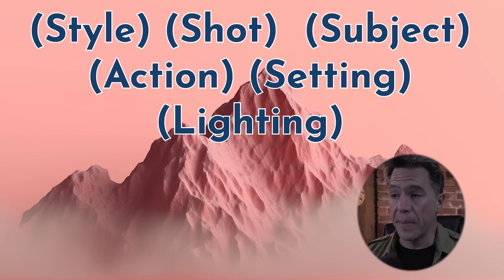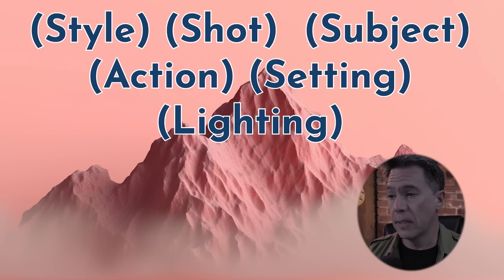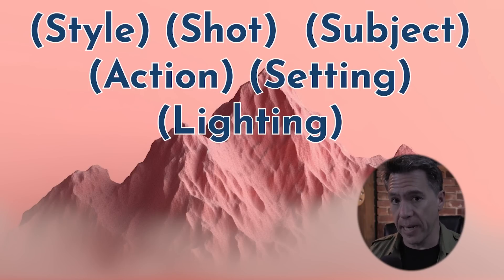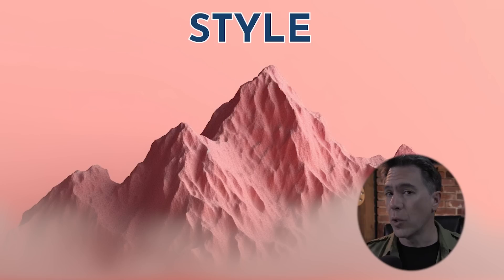The formula is roughly: style, shot, subject, action, setting, and lighting. Alright, let's dive into that. The opening of your prompt should let Gen2 know what kind of thing you're looking for.